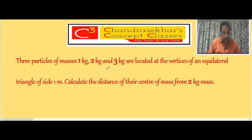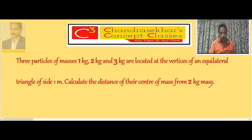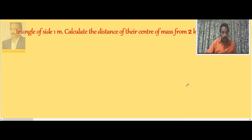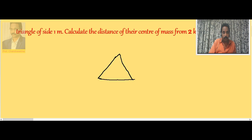Three particles of masses 1 kg, 2 kg, and 3 kg are located at the vertices of an equilateral triangle of side 1 meter. Calculate the distance of their center of mass from the 2 kg mass. Three particles are placed at the three corners or vertices of an equilateral triangle, and we need to find the distance of the center of mass from the 2 kg particle.